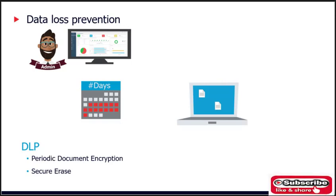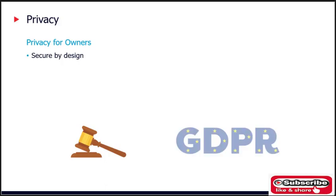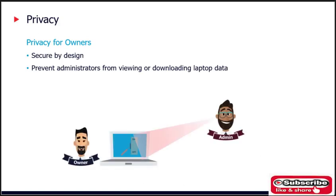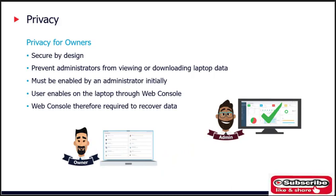The secure erase feature allows the administrator to configure certain files to be erased from a laptop when the device has been offline for more than a set number of days. Another useful feature is privacy for owners, which makes the data itself secure by design. This is especially important for certain data regulations and compliance laws such as GDPR in Europe. The client privacy feature prevents users and administrators who are not client owners from viewing or downloading the data on the client. The privacy feature must be enabled by an administrator before the user can turn it on in the web console.